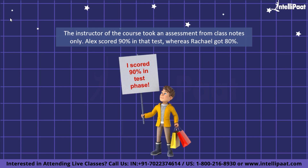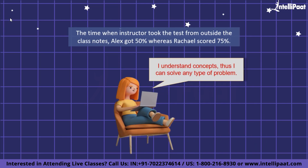You might think Alex's learning process is better than Rachel's — but wait. The instructor took another test, this time not from class notes but from outside material, to check conceptual understanding. This time Alex scored only 50% whereas Rachel scored 75%. That is the entire overfitting concept in machine learning.